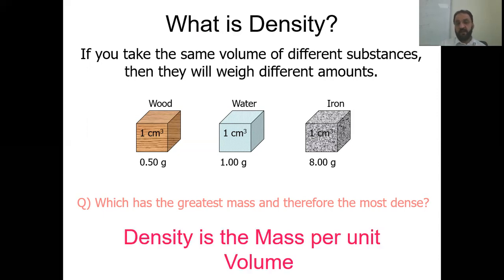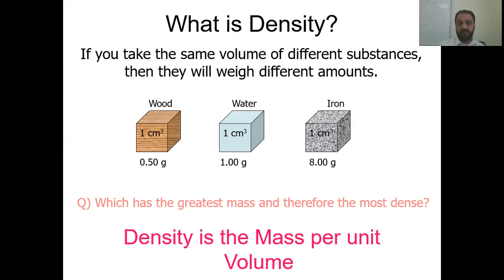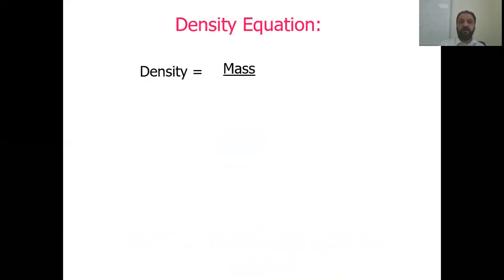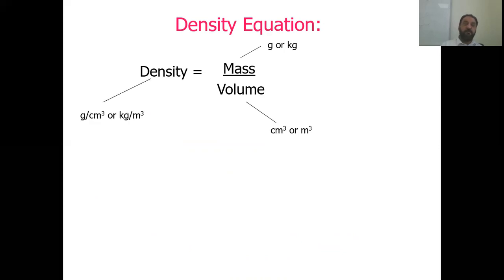We can define density as mass per unit volume — meaning, in 1 centimeter cube, how much mass does that material have. Mathematically, density equals mass divided by volume. Mass is measured in grams or kilograms, volume in centimeter cubed or meter cubed, and the unit of density is grams per centimeter cubed or kilograms per meter cubed.